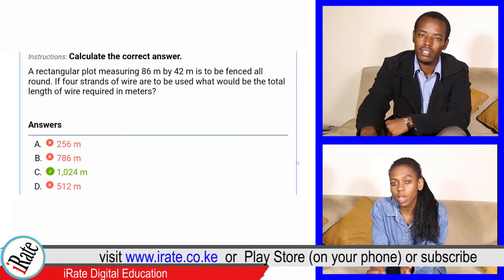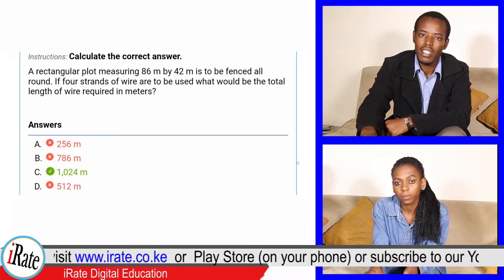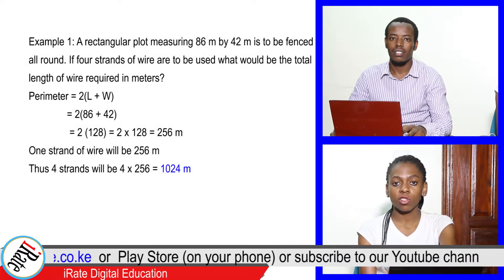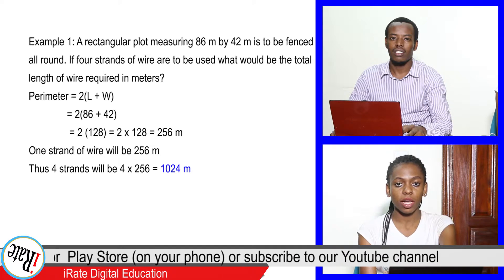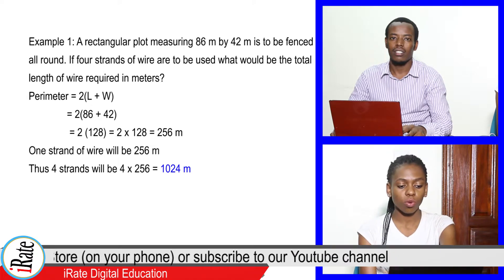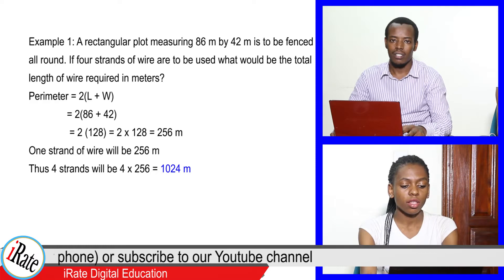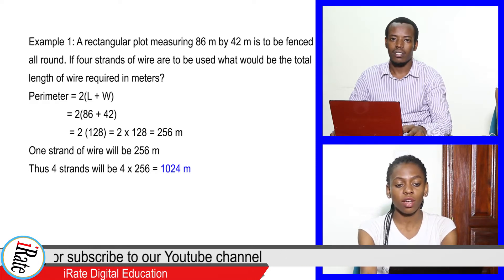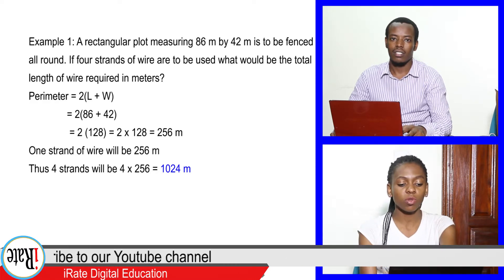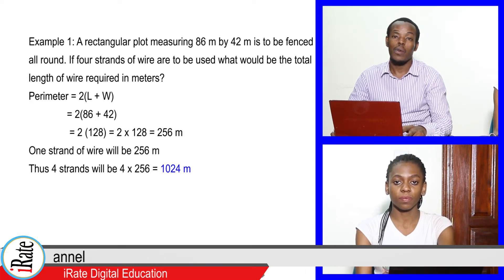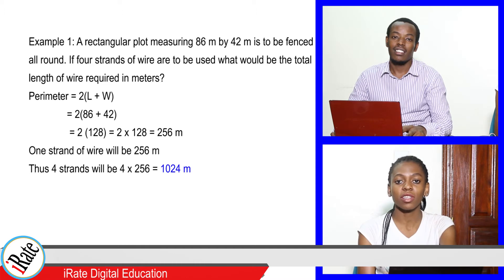The answer is 1024 meters. The perimeter equals two into brackets length plus width: 2 × (86 + 42) = 2 × 128 = 256 meters. Since four strands of wire are used, the total length is 4 × 256 = 1024 meters. We'll proceed to the next question.